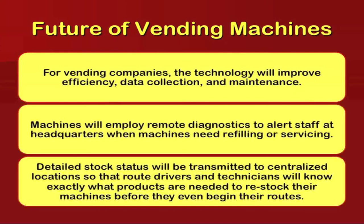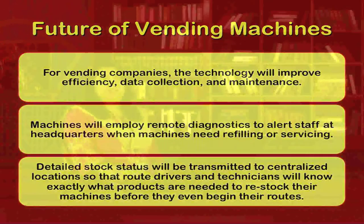The future of vending machines will see technology improve efficiency, data collection, and maintenance. Machines will employ remote diagnostics to alert staff at headquarters when machines need refilling and servicing. Stock status will be transmitted to centralized locations so that route drivers and technicians know exactly what products are needed to restock machines before they begin their routes. Remote sensing will help headquarters understand what is needed and what products are to be refilled.